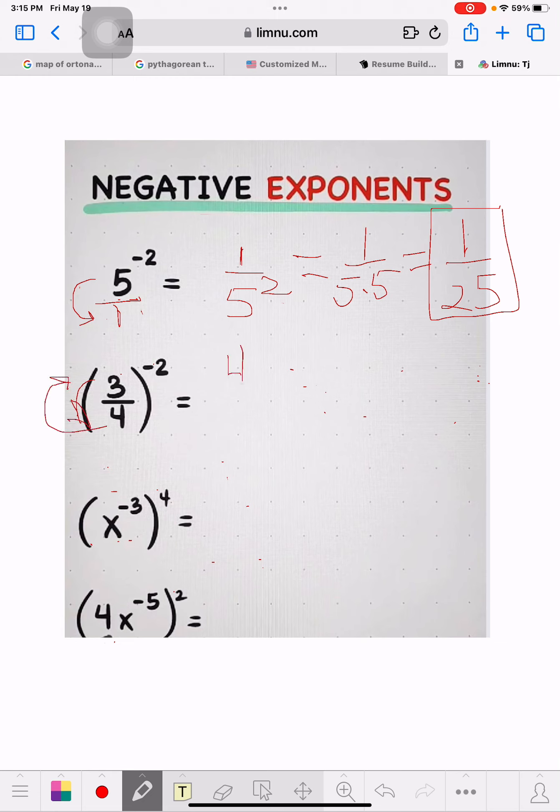End up with 4 over 3. This changes the negative 2 power to a positive. So you get a 2, and you got a 2 here. That equals 4 times 4, and 3 times 3 equals 16 over 9. That's it.